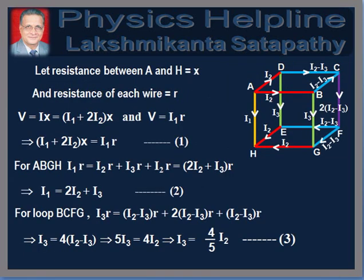Now, for the equations, let the required resistance between A and H be equal to X and resistance of each wire be equal to R. It is given in the question that R is equal to 60 ohms. For this source, we have V is equal to IX, which is equal to (I1 plus 2I2) into X. And for the wire AH, we have V is equal to I1 into R. Therefore, we write (I1 plus 2I2) into X is equal to I1 into R. We mark this as equation 1.